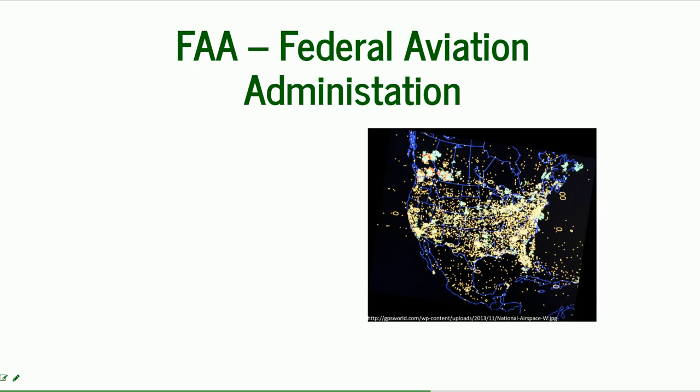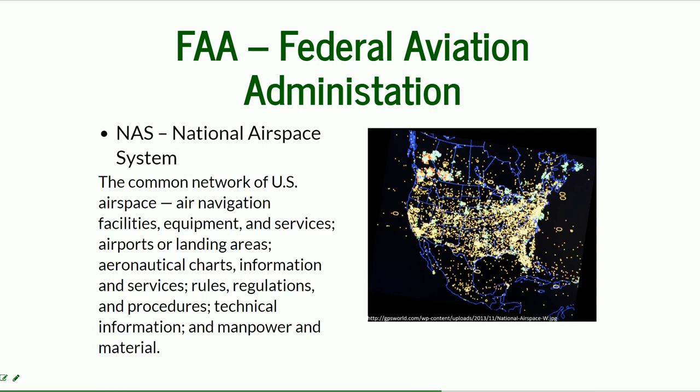The FAA — Federal Aviation Administration — is a really important acronym when dealing with UAS. This map shows the National Airspace System, which is huge and extensive. The NAS includes all air navigation facilities, equipment, services, landing areas, charts, information services, rules and regulations, procedures, technical information, and manpower — everything related to the airspace over the United States.